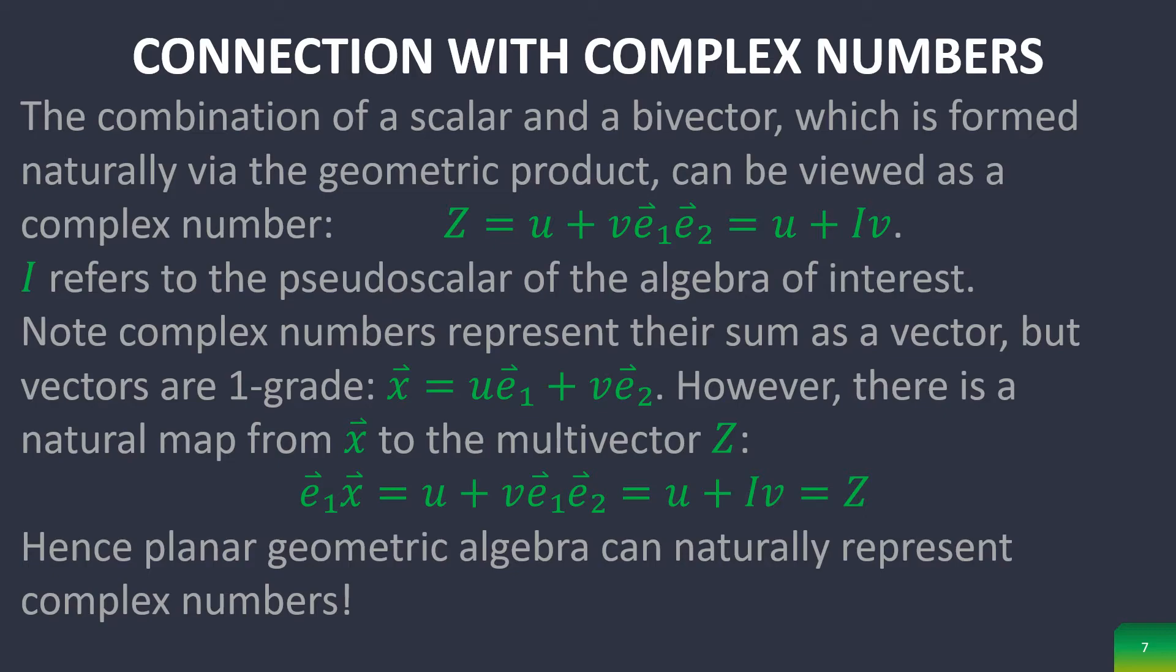But remember that complex numbers represent their sum as a vector, but vectors are 1-grade, whereas bivectors are 2-grade. Thus, we can use this natural map from x vector, that's basically a sum of the orthonormal basis vectors, and you can map that naturally over to the multivector Z, which represents complex numbers.